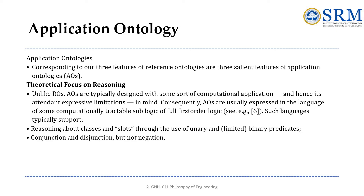For example, imagine an autonomous vehicle that must identify obstacles and navigate the road safely. The ontology behind its AI system needs to process real-time data quickly and efficiently. It doesn't need to model the entire physics of motion like a reference ontology would. Instead, it focuses on defining what an obstacle is, how the car should respond based on different scenarios, and which traffic rules should be followed. By keeping the logic manageable for computation, application ontologies enable fast decision-making, which is crucial in fields like robotics, AI, and automation.